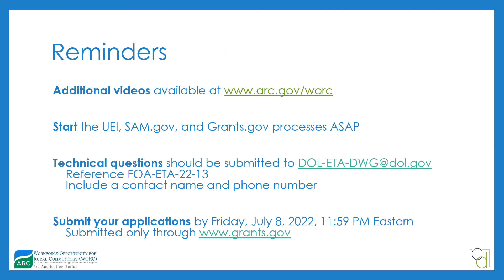A few final reminders: Additional videos are available at ARC.gov/WORK. Start your SAM.gov and grants.gov processes immediately if you haven't already. For technical questions, the formal contact is DOL-ETA-DWG@DOL.gov — reference this FOA and include the contact name and phone number they should respond to. Submit your application by Friday, July 8th, by 11:59 p.m. Eastern Time, only digitally through grants.gov.